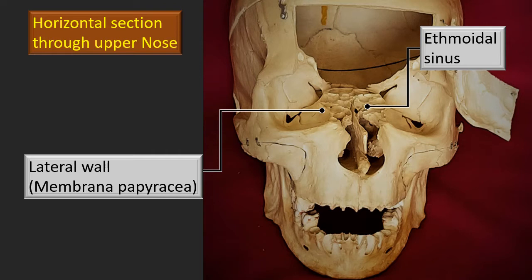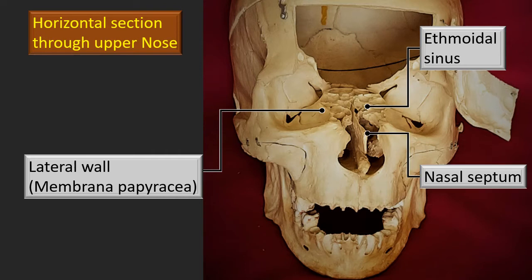The lateral wall is also known as membrana papyracea, which means it is very, very thin. We will use a transilluminated skull to understand how thin it is and how such a thin wall can transmit infection into the orbital cavity. That means if you leave an ethmoidal sinus infection unattended, there is a high risk of orbital cellulitis — that's the danger point. The nasal septum gives a clear division into right and left, and the two ethmoidal sinuses are on either side of the upper end of the nasal septum. Remember the ethmoid bone has its own perpendicular plate as a component of the nasal septum.